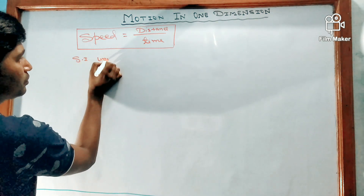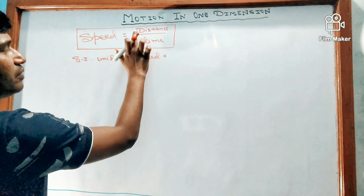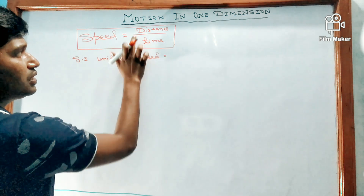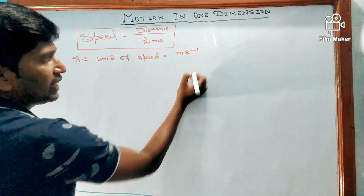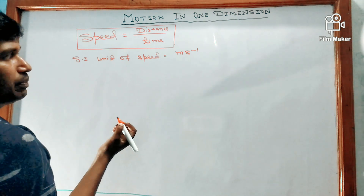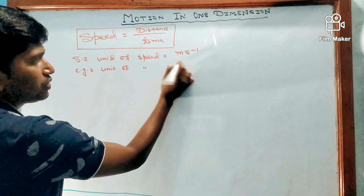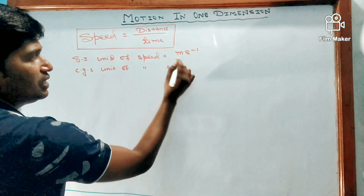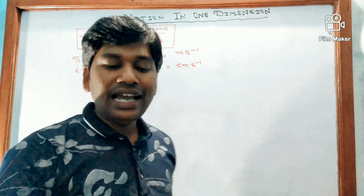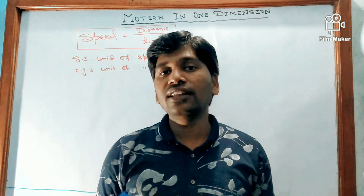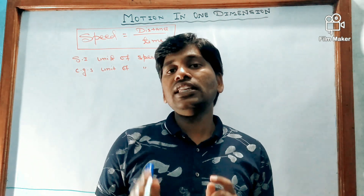The SI unit of speed: since speed equals distance by time, and distance is measured in meters and time in seconds, the SI unit of speed is meter per second. The CGS unit of speed is centimeter per second, since in the CGS system distance is measured in centimeters and time in seconds. When measuring the speed of a vehicle, we use kilometer per hour, so let us see the conversion from kilometer per hour to meter per second.